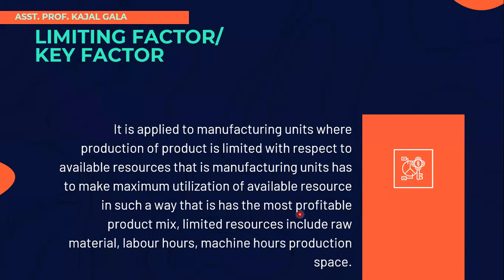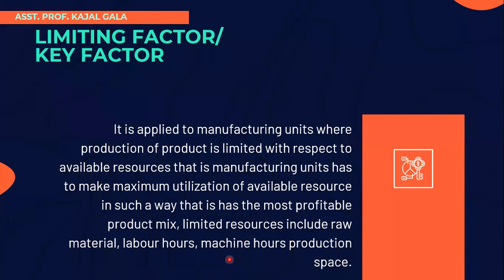When we talk about these resources, we are talking about raw material. The most basic thing we need is raw material. Even if we have raw material, but if we don't have labor, we won't start the production process. So these limited resources include raw material, labor hours, machine hours, and production space.